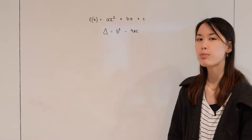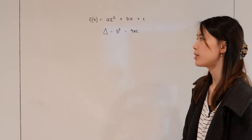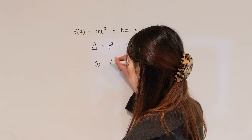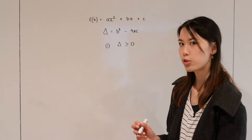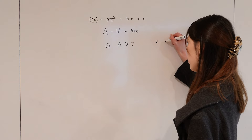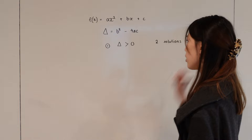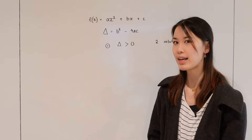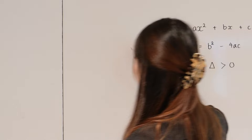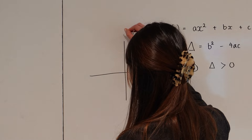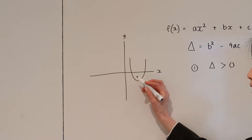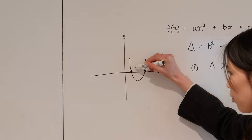The first is if the discriminant is greater than zero. If the discriminant is greater than zero, this means that there are two solutions. And this means that in the context of the parabola, the parabola will cross the x-axis at two distinct points. You can see here that the parabola crosses the x-axis at one, two points, and those are your two solutions.